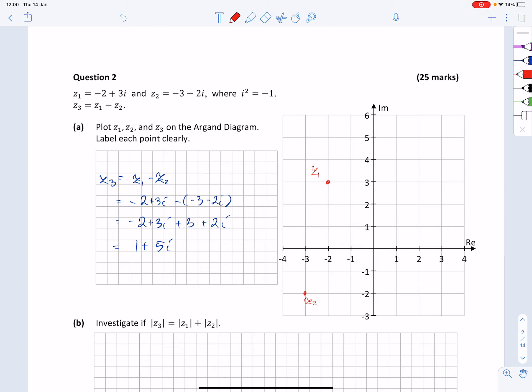And finally, Z3 is plus 1 along the real axis, and plus 5 along the imaginary, so we're going to put it right here and label it clearly Z3. Okay, all went on good.